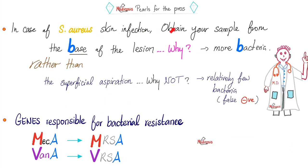When you are scraping the skin to send a sample to the lab, make sure to scrape deep from the base of the lesion, because the base has more bacteria — it is dirtier. How do bacteria gain resistance? MRSA has resistance thanks to MecA. VRSA has resistance thanks to VanA. If you have MRSA, give vancomycin. If you have VRSA, give linezolid.